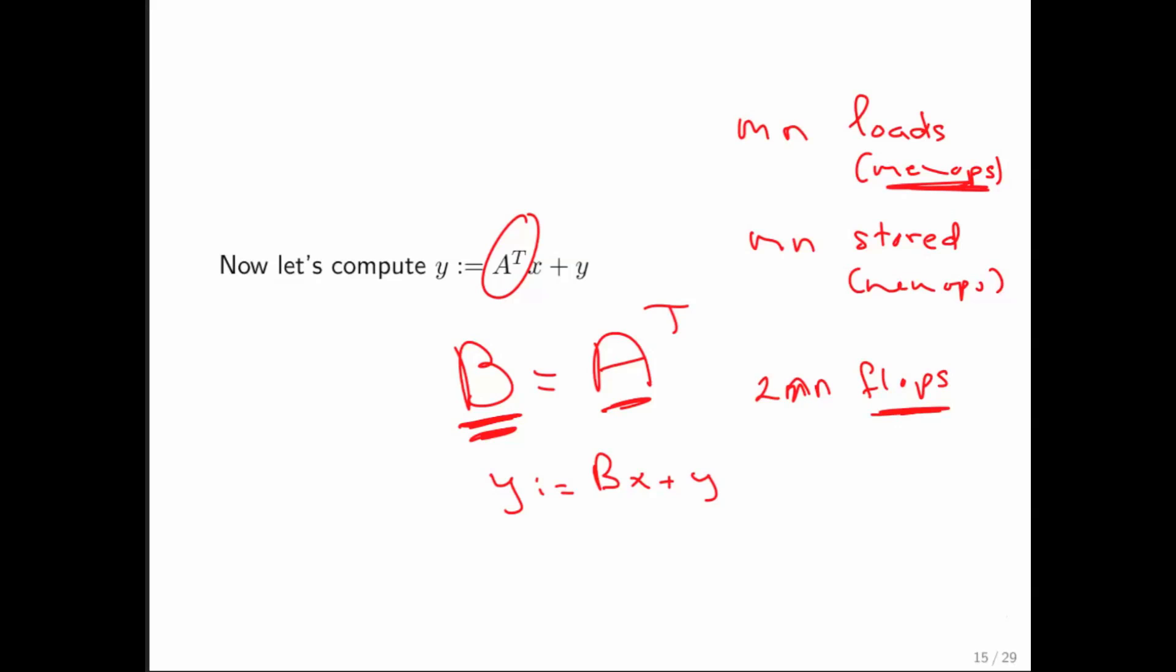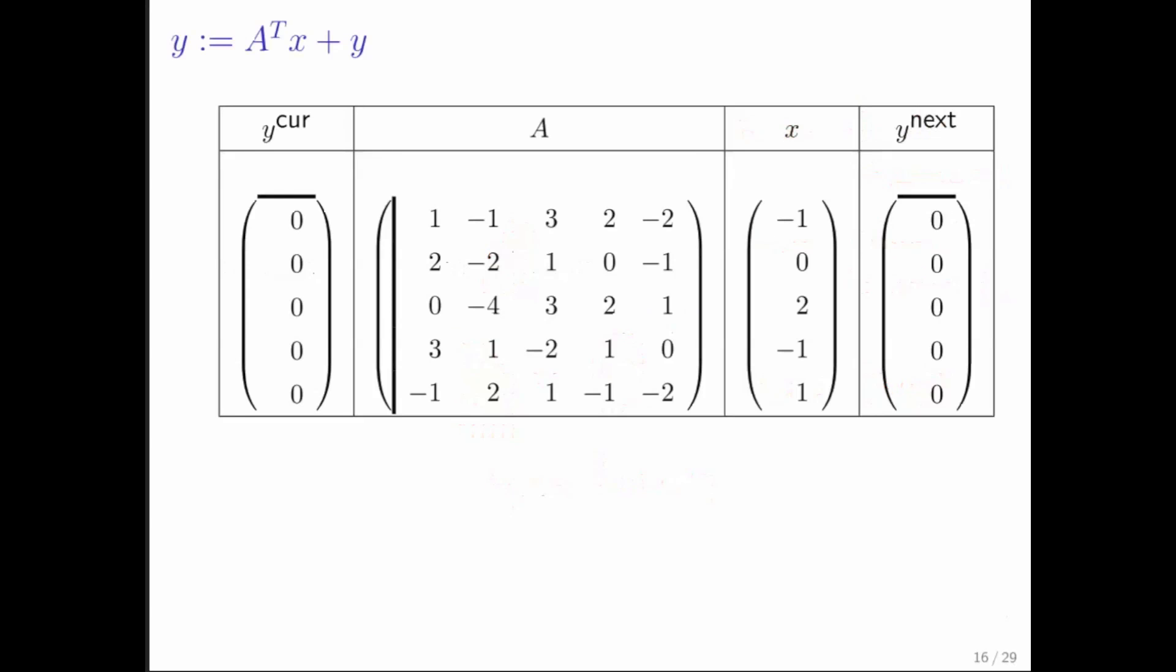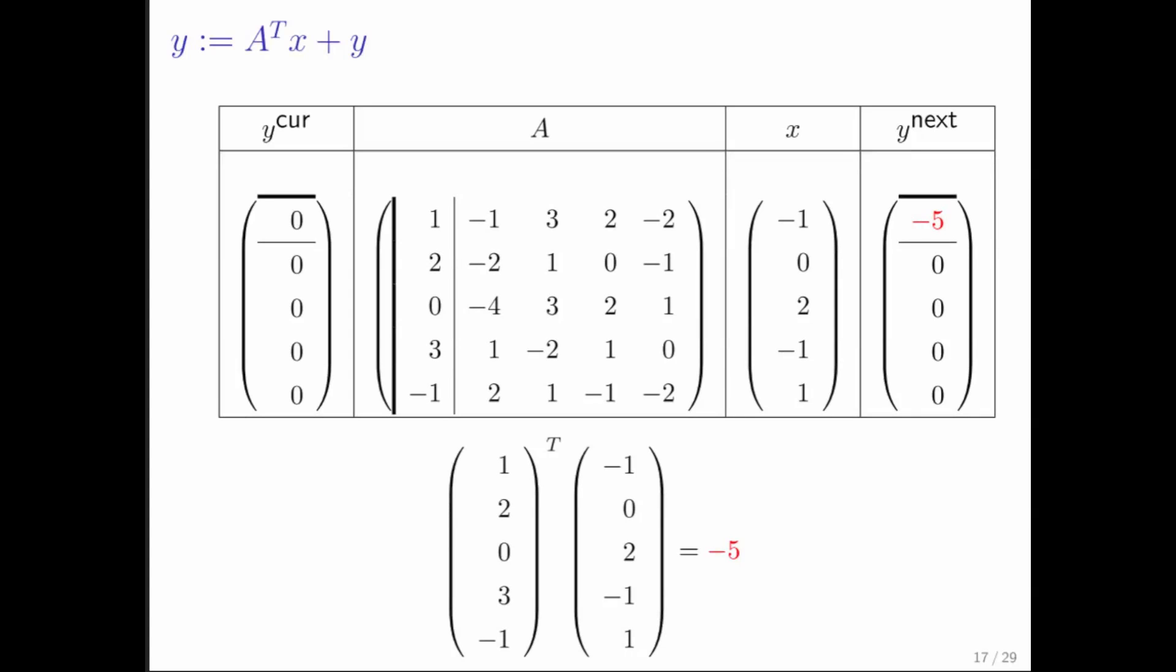So what we want to do is we want to compute with A transpose without actually transposing it. Now how can we do that? Well, we recognize that when we transpose A, the first column becomes the first row with which you would then want to do a dot product with vector x. Why not just leave the column alone where it is instead of actually making it into a row?